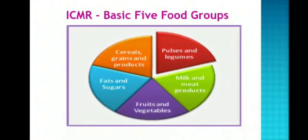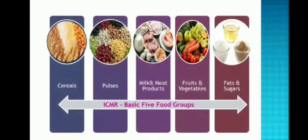ICMR recommends basic five food groups for planning a day's menu and planning a balanced diet. The ICMR recommended basic five food groups are cereals, pulses, milk and milk products, fruits and vegetables, and fats and sugars.